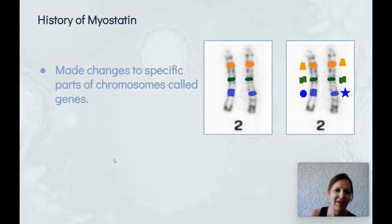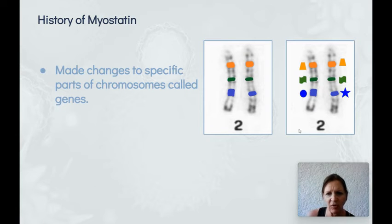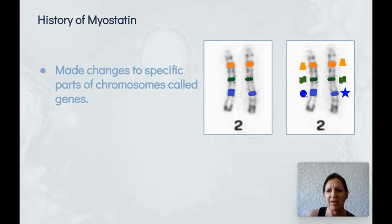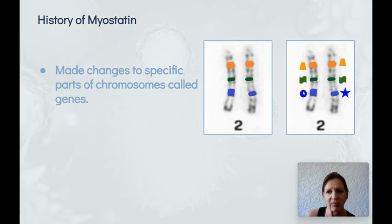What scientists did was make changes to specific parts of the chromosome called genes. Chromosomes have all these bands, and these are where the genes are. We've been using symbols, colors, and shapes to designate different bands — so we've got a blue band, a green, and an orange on each pair of chromosomes. The blue band has a circle form and a star form representing the different versions of genes.